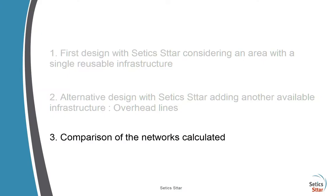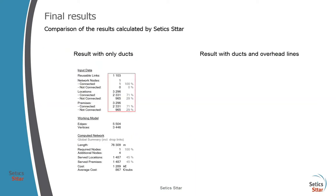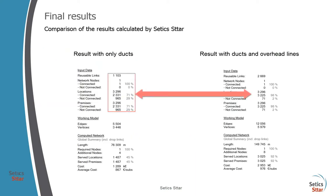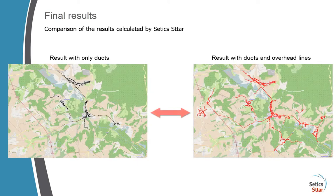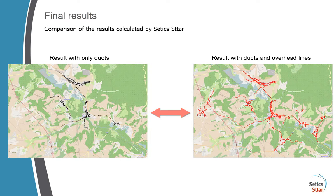Let's switch to the final comparison. Here we see the difference in numbers. We actually enhanced the coverage from 45% to 92%. We view the networks calculated in both cases. We could continue the process by adding a third infrastructure like the road network, allowing new civil works to be created.